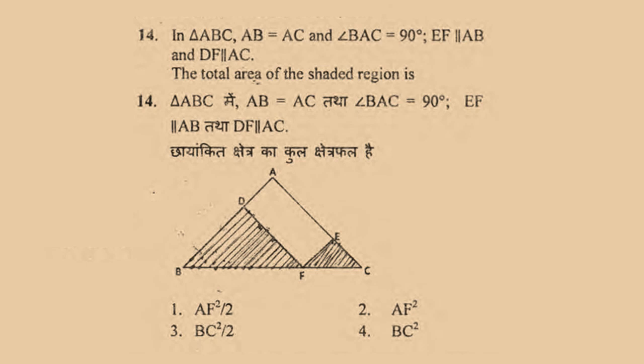Problem 14 statement: In triangle ABC, AB = AC, angle BAC = 90°, EF is parallel to AB, and DF is parallel to AC. The total area of the shaded region is: option 1 AF²/2, option 2 AF², option 3 BC²/2, option 4 BC².